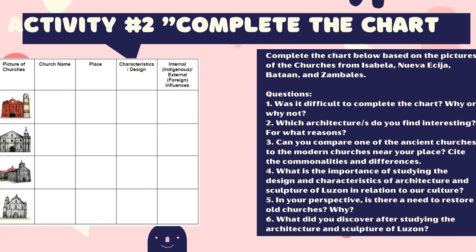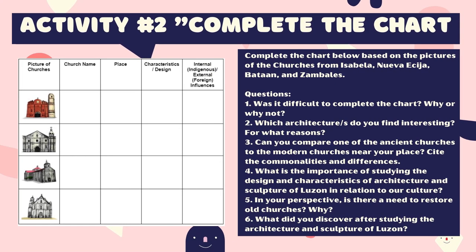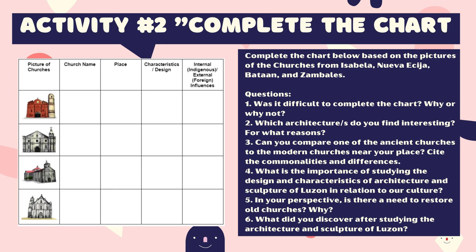Now let's proceed to activity number two. Complete the chart below based on the pictures of the churches from Isabela, Nueva Ecija, Bataan, and Zambales, and answer the following questions: 1. Was it difficult to complete the chart? Why or why not? 2. Which architectures do you find interesting? For what reason? 3. Can you compare one of the ancient churches to the modern churches near your place? Cite the commonalities and differences. 4. What is the importance of studying the design and characteristics of architecture and sculpture of Luzon in relation to our culture? 5. In your perspective, is there a need to restore old churches? Why? 6. What did you discover after studying the architecture and sculpture of Luzon?